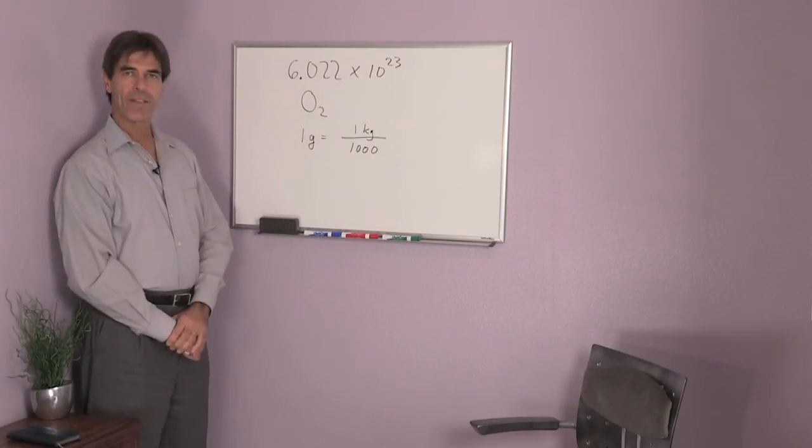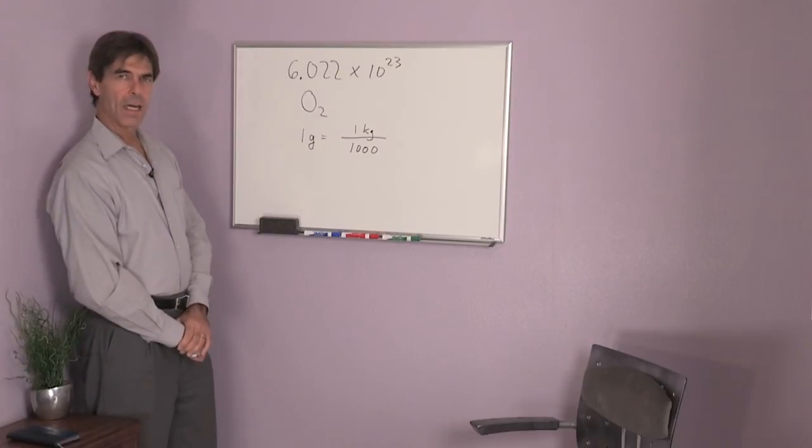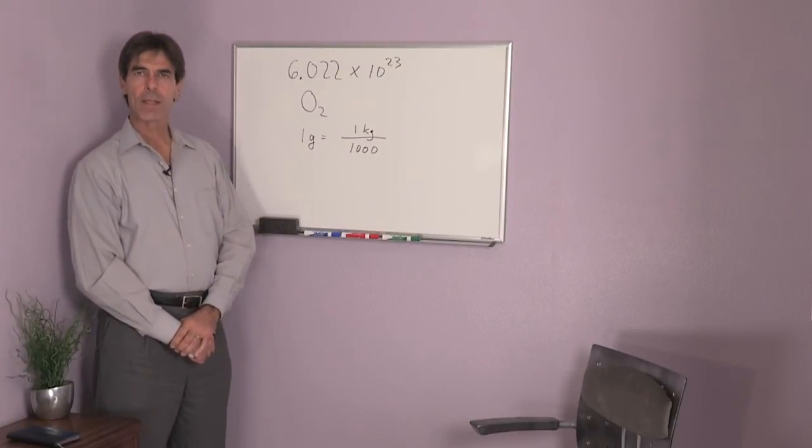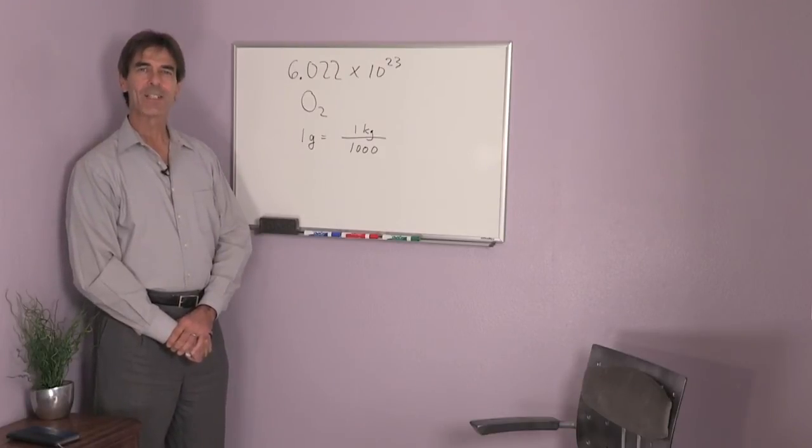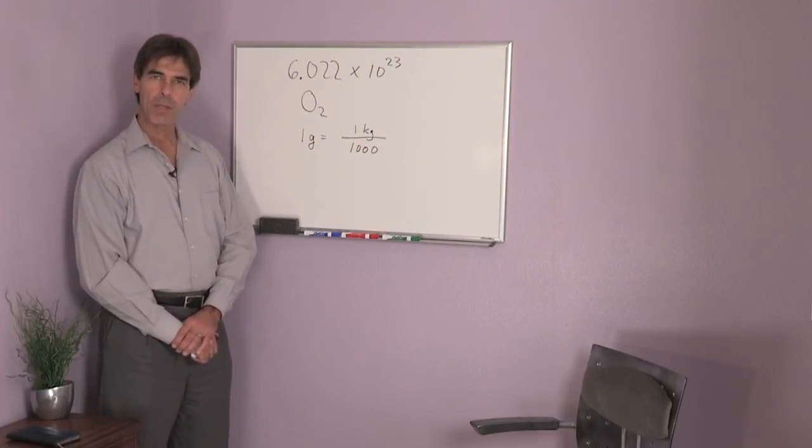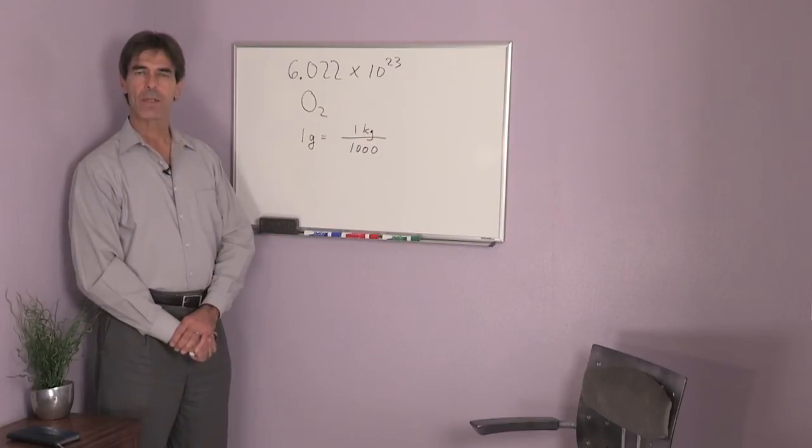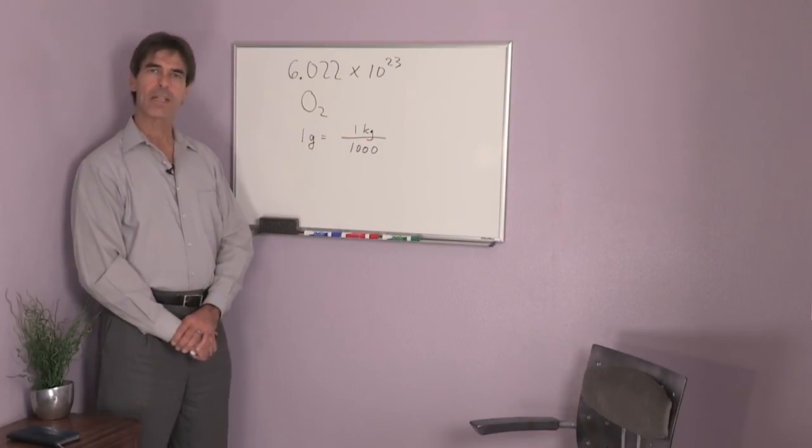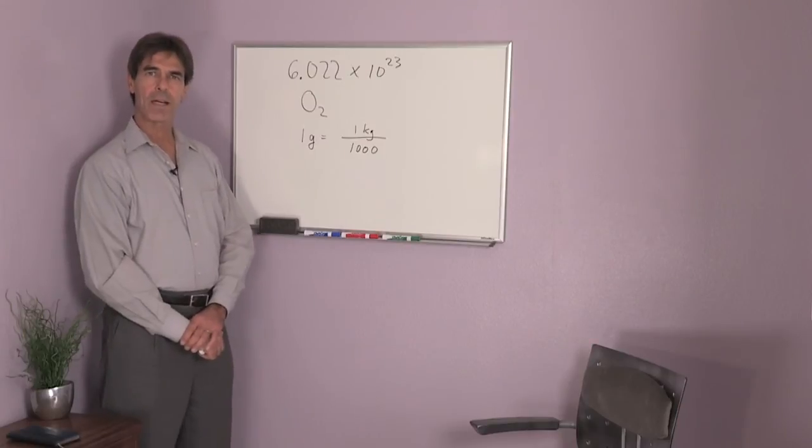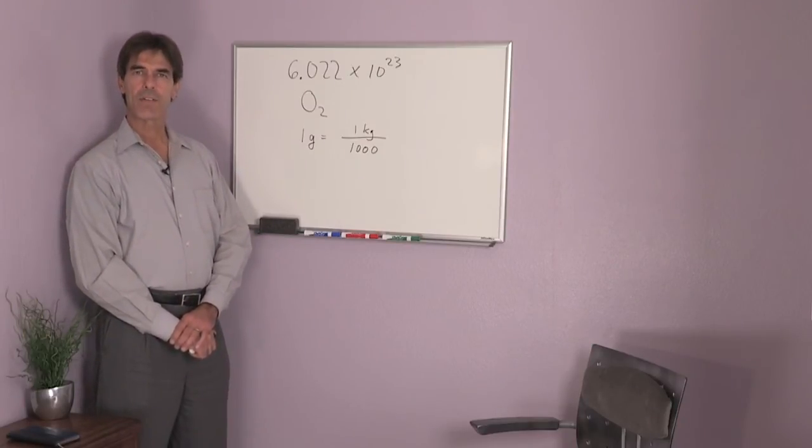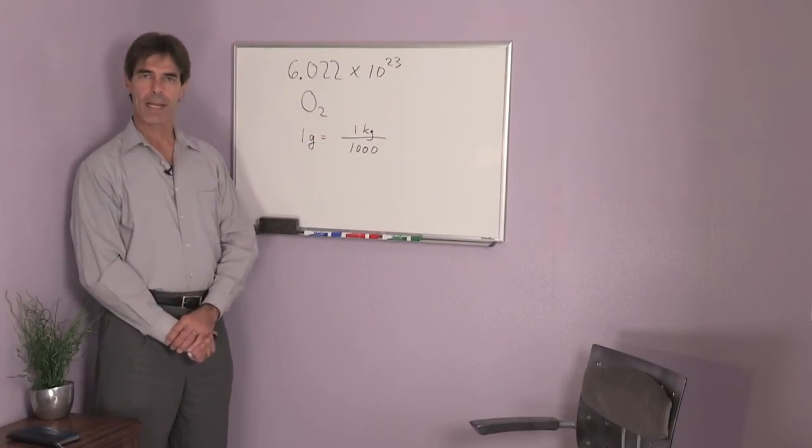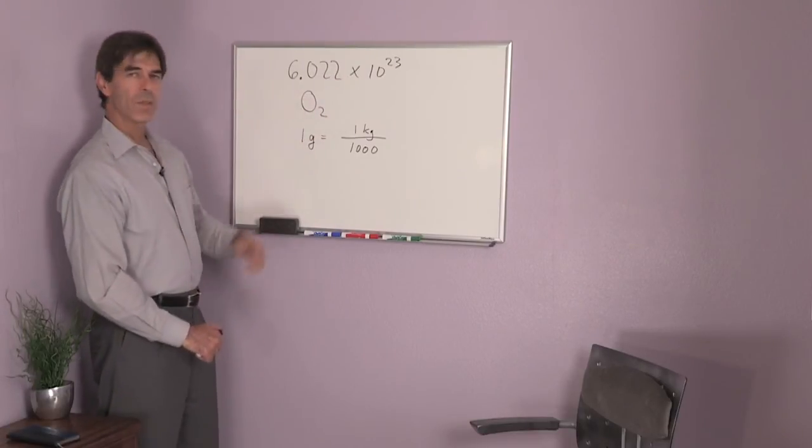The definition of a mole is actually the number of carbon atoms in 12 grams of carbon-12. So carbon-12 is an atom that has six protons and six neutrons in the nucleus and six electrons in the outer electron cloud. That is, 12 grams of carbon has exactly this number of carbon atoms.